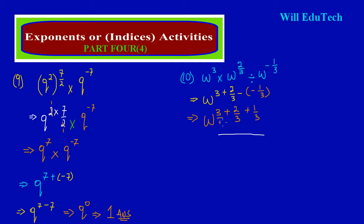Now let's find the LCD, which is the lowest common denominator — that would be 3. So: 1 into 3 goes 3 times, and 3 threes give us 9. Adding to that, 3 into 3 goes 1 time and 1 times 2 gives us 2. Then 3 into 3 goes 1 time and 1 times 1 gives us 1. So we have 9 plus 2 is 11, and 11 plus 1 is 12 — giving us 12 upon 3 for our power.